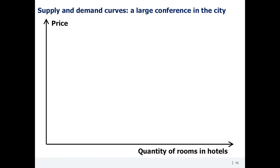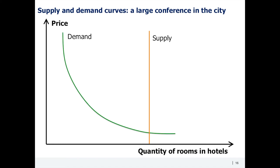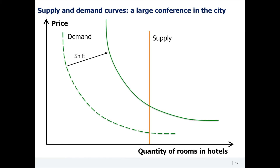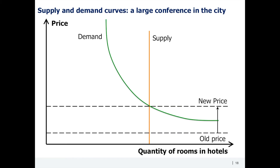For example, if a large conference takes place in a city, hotel rates are likely to skyrocket. That dynamic is due to the shift of the demand curve to the top right, as more customers are willing to get the service. As for the supply curve in this particular market, it is a vertical line, as the capacity of hotels is fixed — that's why the price increases so quickly.